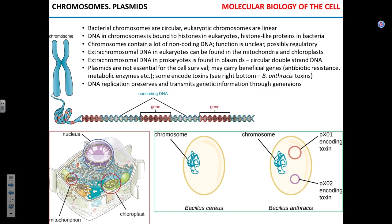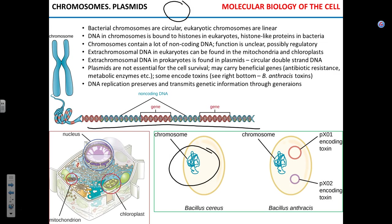Bacterial chromosomes are circular, which doesn't mean they assume the shape of a perfect circle — it means they have no loose ends. Eukaryotic chromosomes have a linear shape, which also doesn't mean they are straight. The total length of human DNA, if you put it all together, would be several meters — maybe around 10 feet — which is quite a lot.